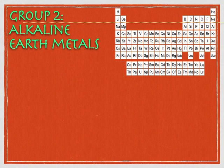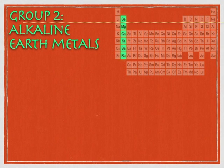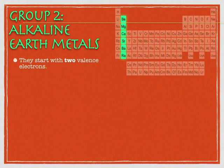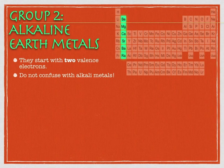We'll start with the alkaline earth metals. They have two valence electrons, and that means they are going to be less reactive than the alkali metals, because they have to lose two valence electrons instead of one. It's also very important to remember that the term 'alkaline earth metal' is different from 'alkali metal' — there is no such thing as an 'alkali earth metal' or an 'alkaline metal.' Be careful about that terminology.